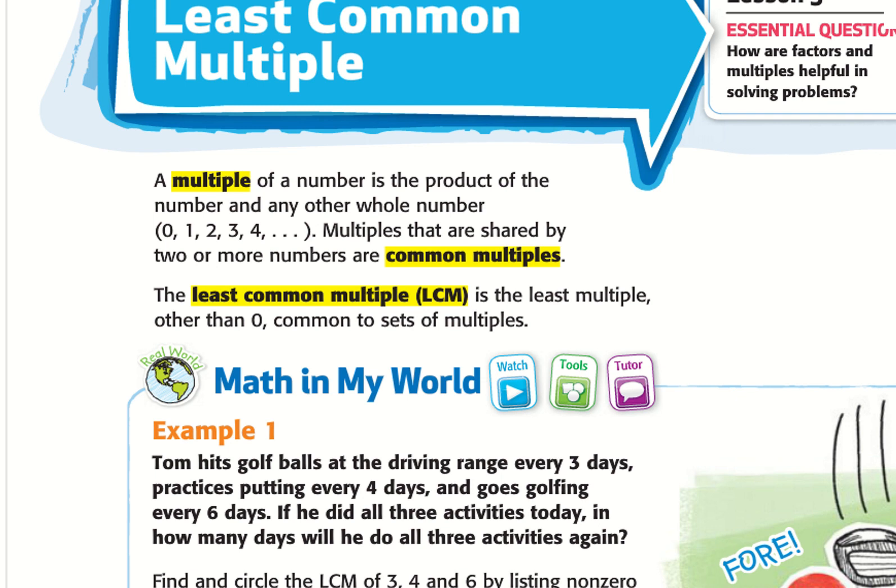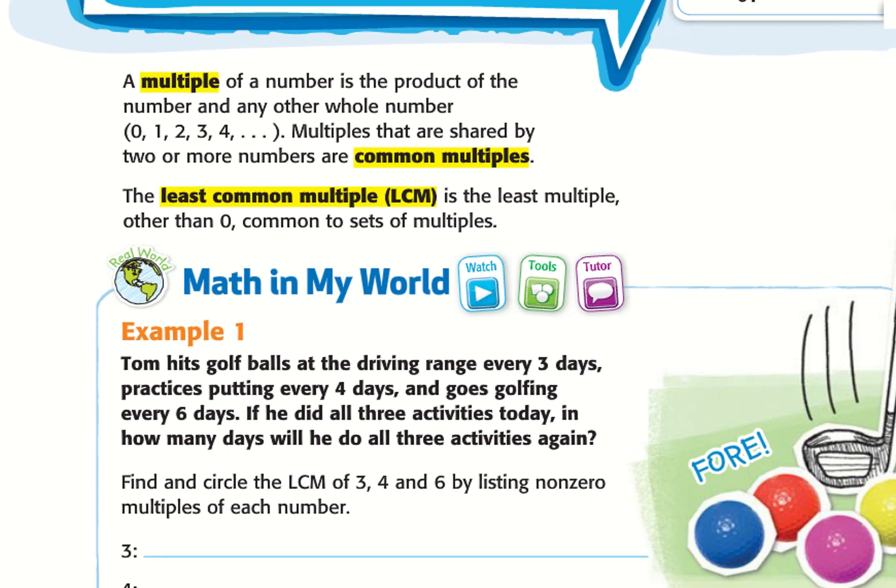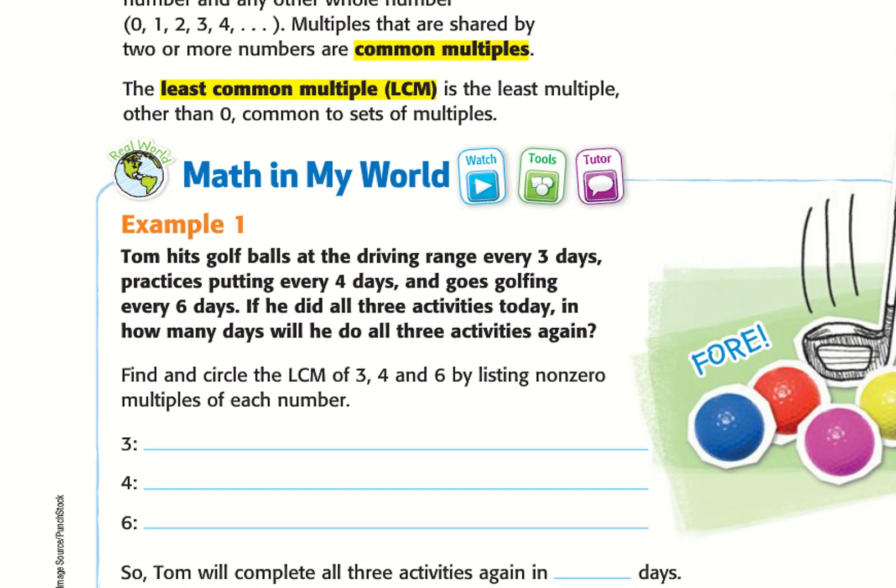So here it says a multiple of a number is the product of a number and any whole number. So 0, 1, 2, 3, 4. Multiples that are shared by two or more numbers are common multiples. The least common multiple is the least multiple other than 0 common to the sets of its multiples.